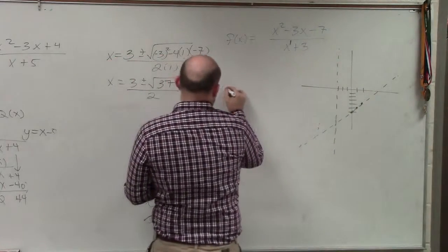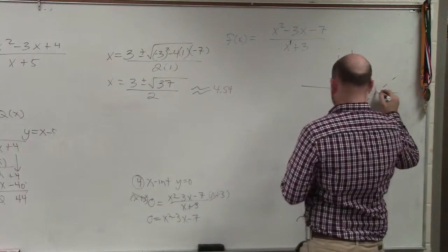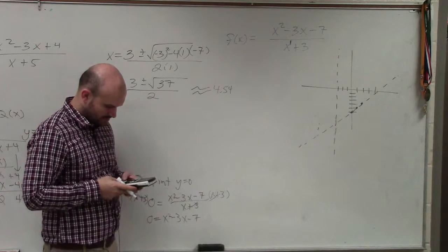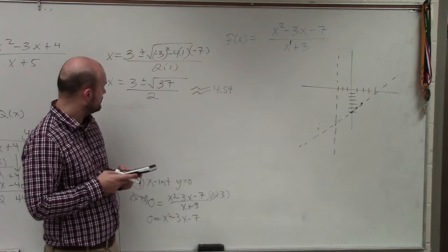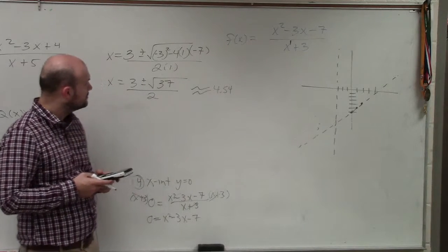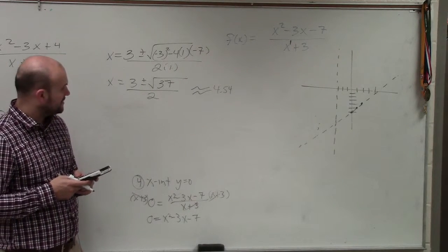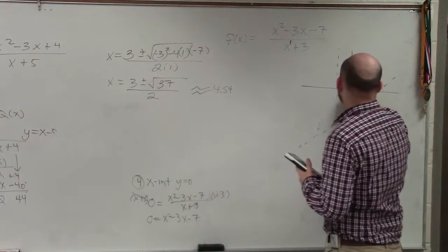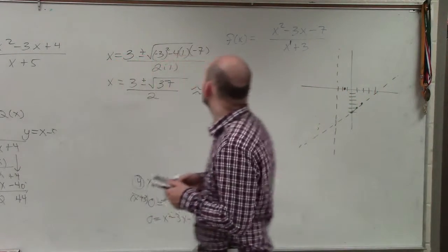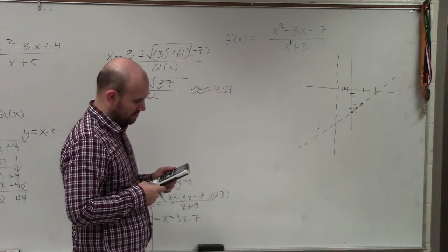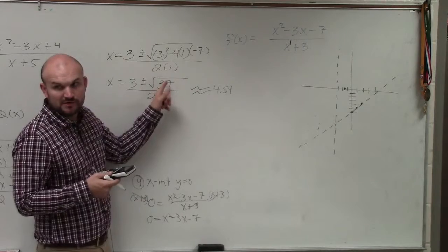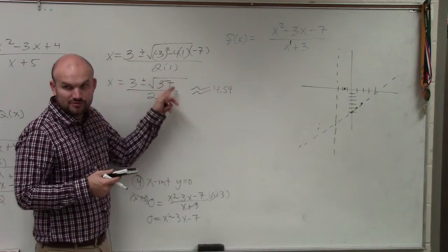But you could do square root of 37 plus 3 divided by 2? 4.54. 4.54. So 1, 2, 3. And negative 0.041. I'm getting negative 1.54. 3 minus the square root of 37 divided by 2 is negative 1.54. Yes, I agree with you. You have two y-intercepts. So we didn't do that. You do 3 plus the square root of 37 divided by 2. You do 3 minus the square root of 37 divided by 2.